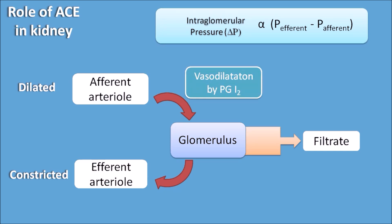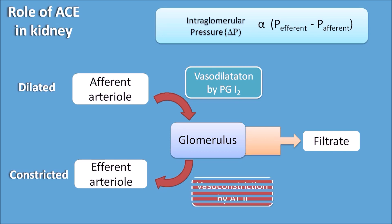Dilatation of the afferent arterioles is mediated by prostaglandin I2, also called prostacyclin. Constriction of the efferent arterioles is mediated by angiotensin II. These two are the important mediators acting on the renal system, producing vasodilatation of the afferent arterioles and vasoconstriction of the efferent arterioles.